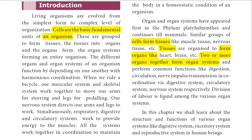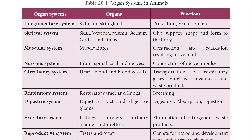Cells are the basic fundamental units of all living organisms. A group of cells join together to form tissue, and a group of tissues are organized to form an organ. Two or more organs join together to form an organ system. There are a number of systems in our body, and a division of labor is found among these various organ systems.